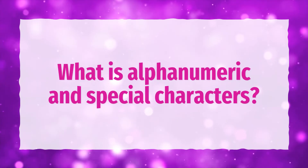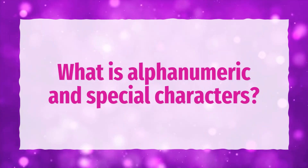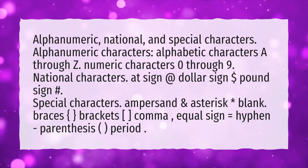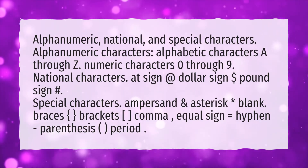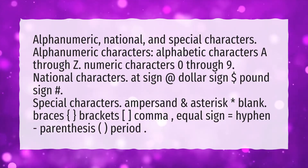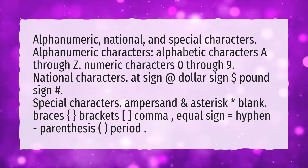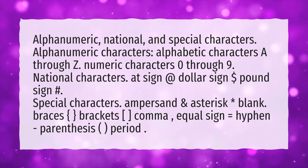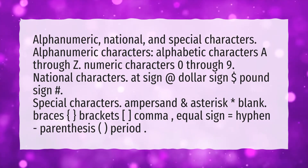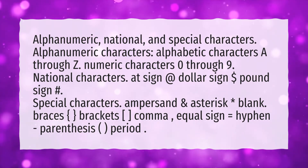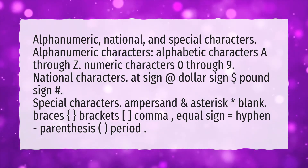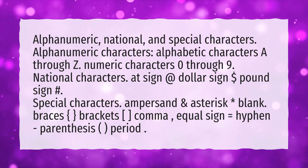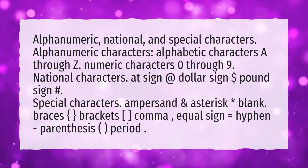What is alphanumeric and special characters? Alphanumeric characters include alphabetic characters A through Z and numeric characters 0 through 9. National characters include the at sign, dollar sign, and pound sign. Special characters include ampersand, asterisk, and blank.